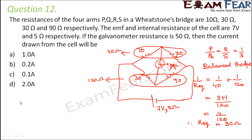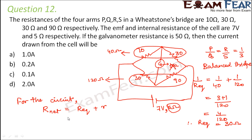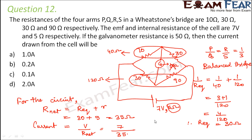Now for the overall circuit, R equivalent is just the equivalent resistance of the bridge part. We must also consider the internal resistance of the cell. The net resistance of the circuit equals R equivalent plus internal resistance, that is 30 ohms plus 5 ohms, which is 35 ohms. Therefore the current drawn from the cell equals V divided by R net, which is 7 volts divided by 35 ohms, equal to 1 by 5 ampere, or 0.2 amperes.